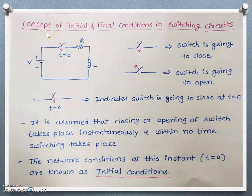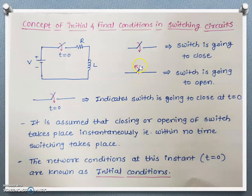First we discuss the concept of initial and final conditions in switching circuits. Let us consider one circuit consisting of a voltage source V, a switch at t=0, resistor R, and an inductor — this is an RL series circuit with DC supply voltage. The arrow on the switch indicates that if the arrow is in the downward direction the switch is going to close, and if the arrow is in the upward direction the switch is going to open.